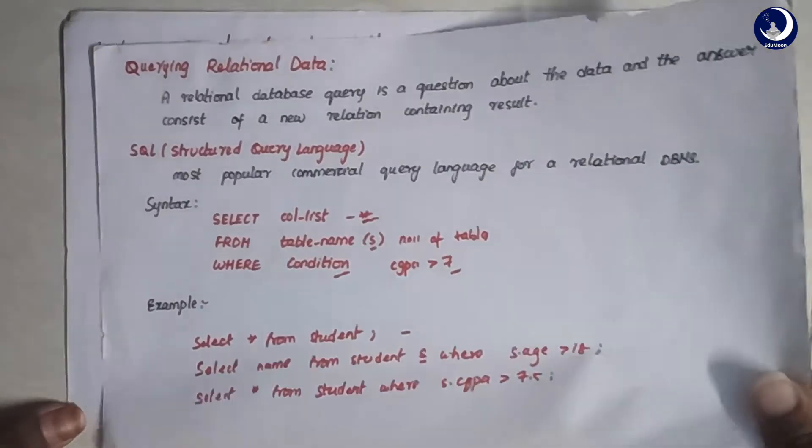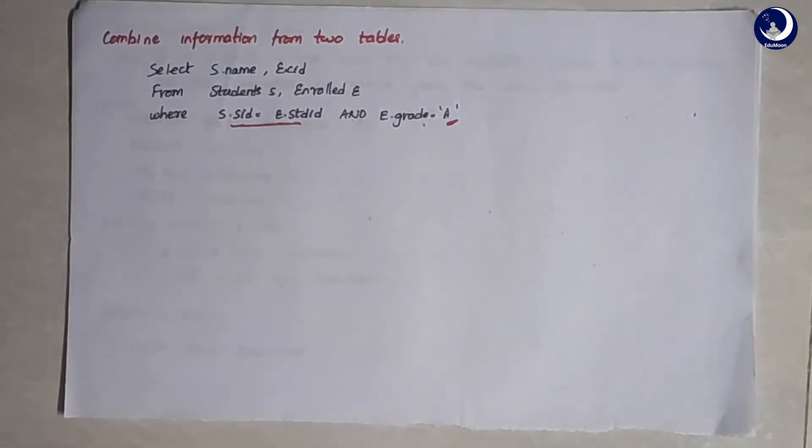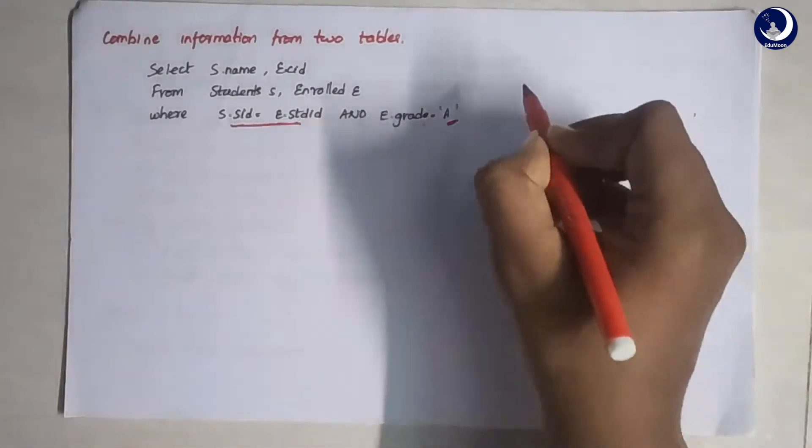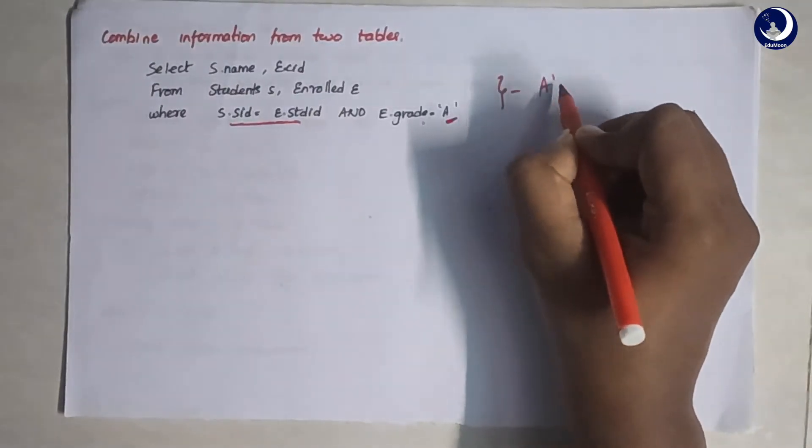Now let's see how we write a SELECT statement for a combination of tables. This is an example of applying the SELECT statement on two different tables — a student table and an enrolled table — where we equate S.SID equal to E.studentID. We also compare E.grade to be 'A', so basically we are retrieving the details of students who got an A grade.